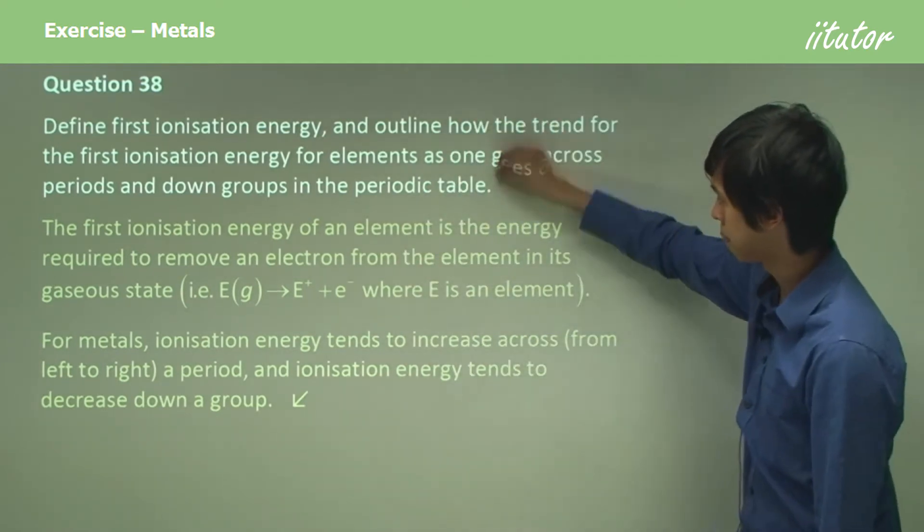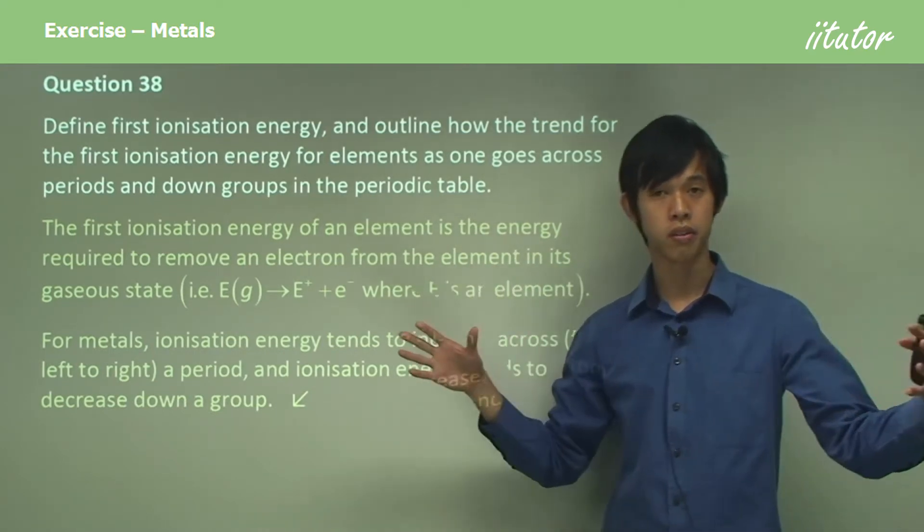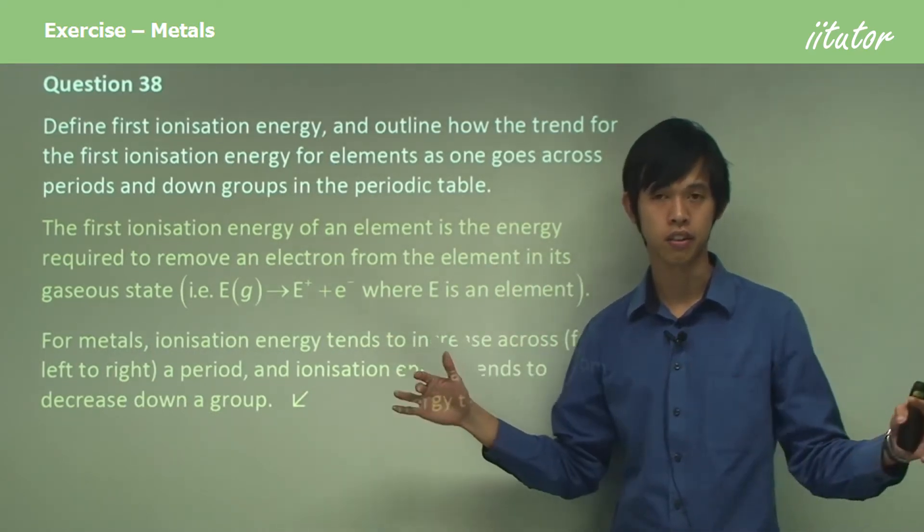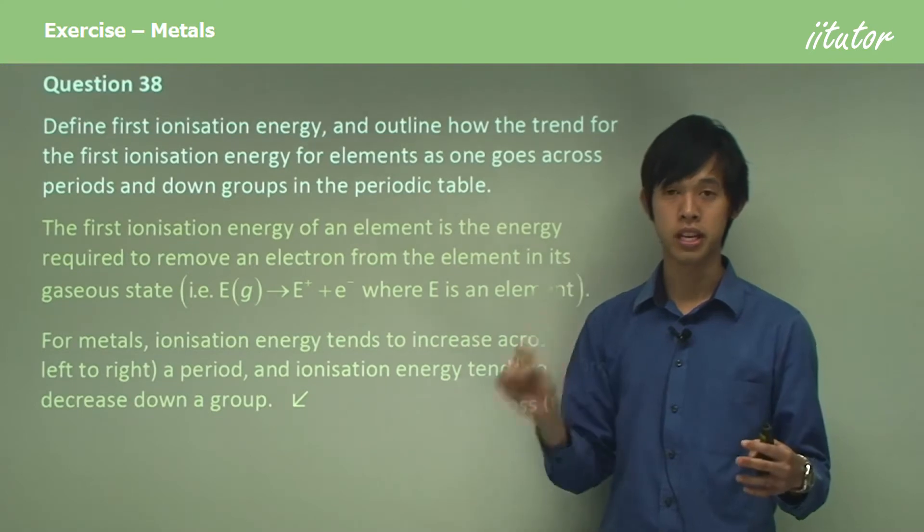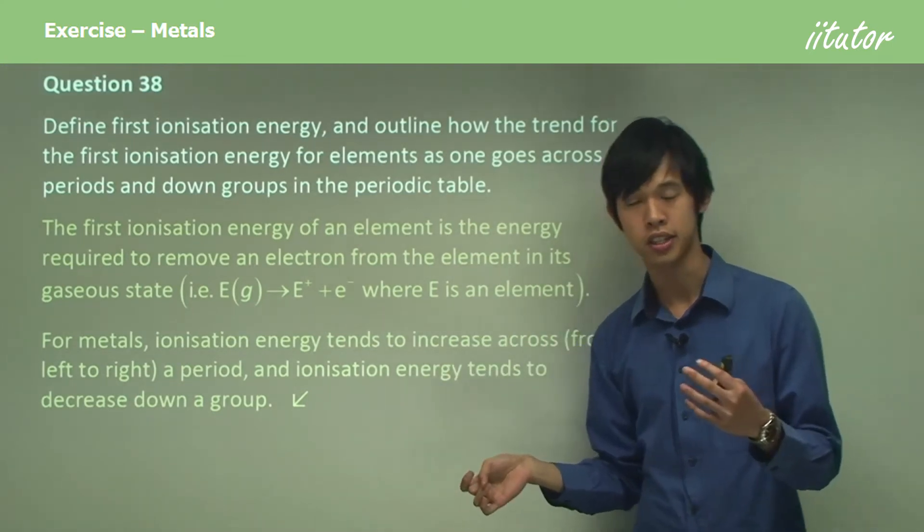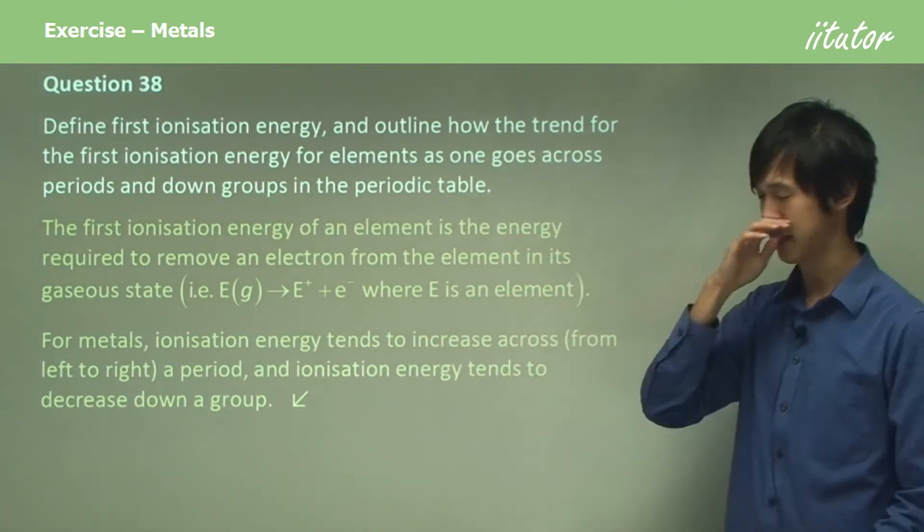As you go down the group, because the outer shell electrons are getting further and further away, the electrons become easier to remove, so the ionization energy goes down. That's the answer to that question.